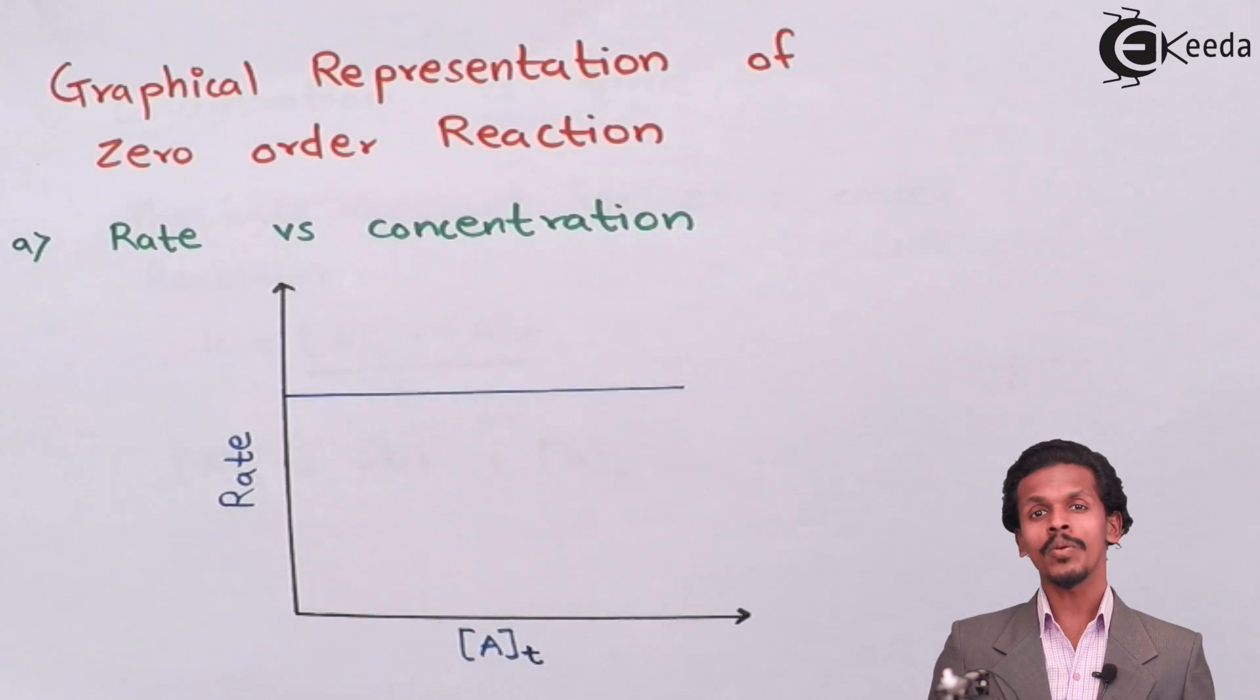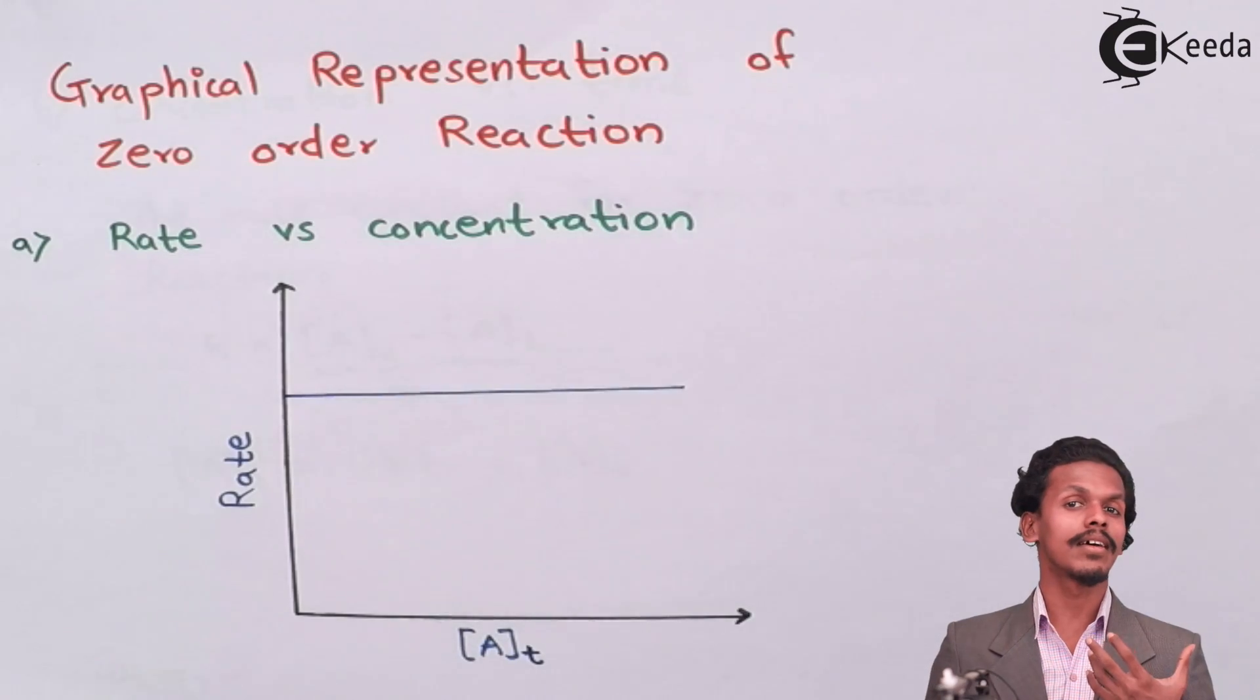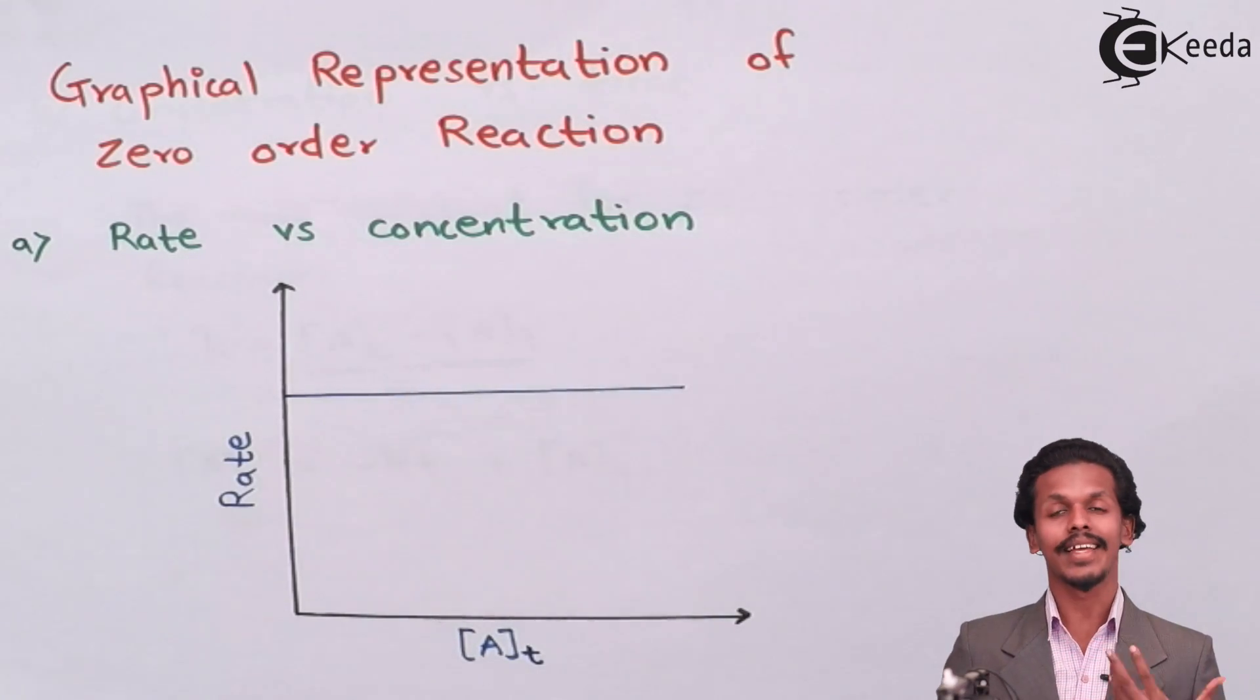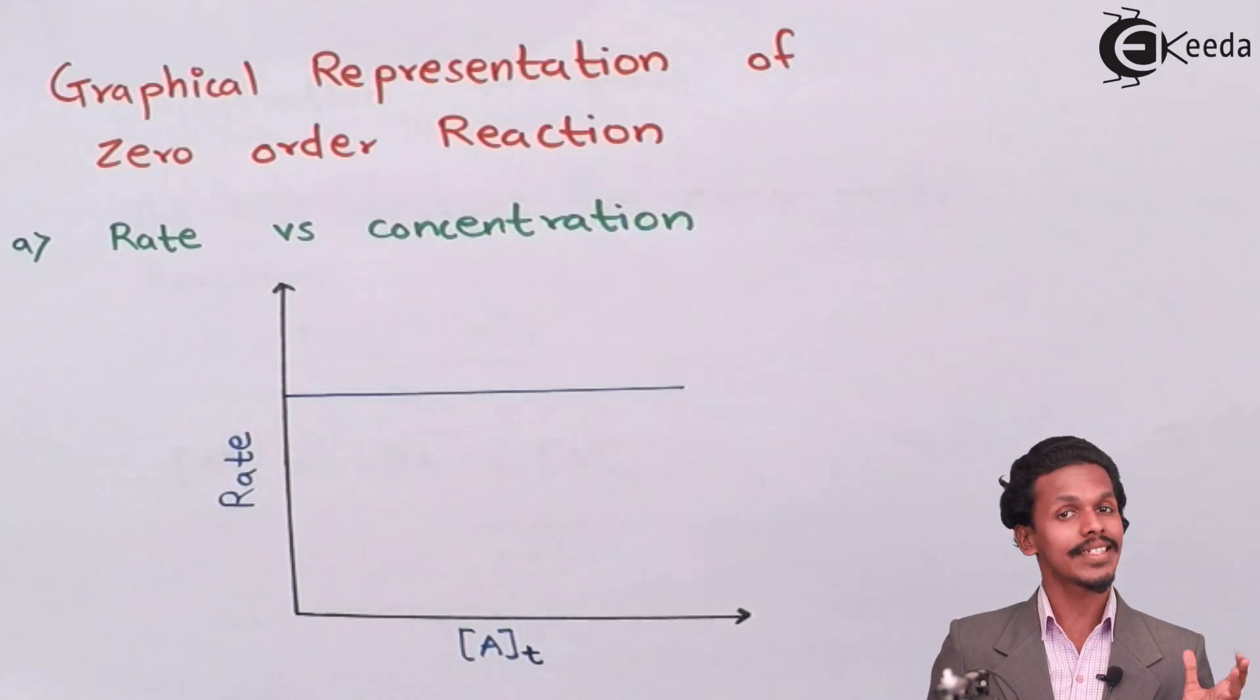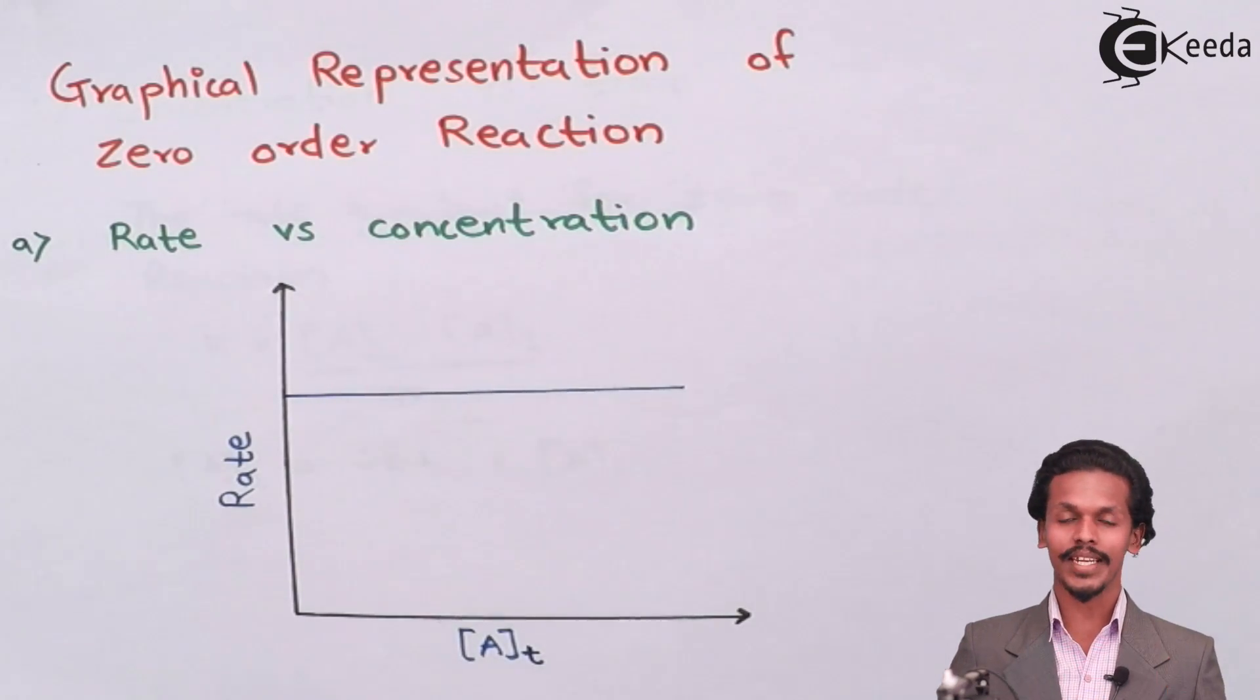So friends, as you know, for a zero-order reaction, the reaction rate is independent of the concentration of the reactant, which means that it will be staying constant throughout the whole reaction. So this is the graph that is present on your screen,